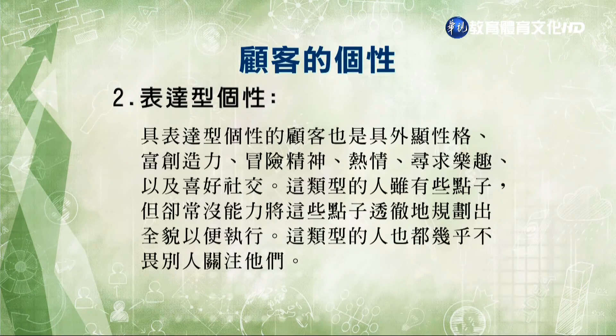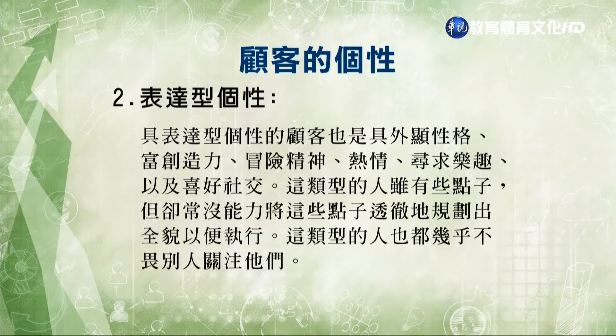第二種個性叫表達型個性，具表達型個性也是具有外顯性格、富創造力、冒險精神、熱情、尋求樂趣以及喜歡社交。這類型雖然有些點子，但卻沒有能力將這些點子透徹全面地規劃執行，他們幾乎不為他人關注，常常把焦點放在自己身上而不是做最好的傾聽者，所以購買決策會比較緩慢。有些形容詞可以描述這類顧客，像易衝動、有影響力、迷人的、自信、具體性、生動型等等。